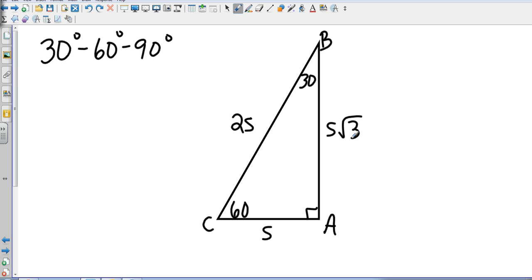So again, smallest side is S. Largest side, which is the hypotenuse, is 2S. And then our middle side is going to be S times the square root of 3. So let's go with just a basic 30-60-90.